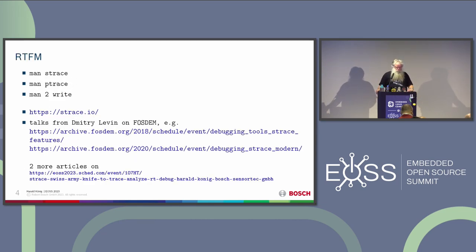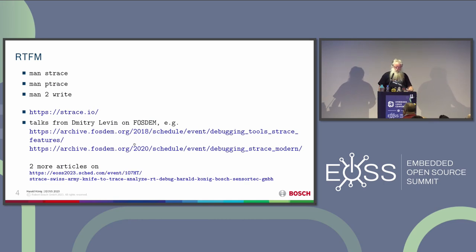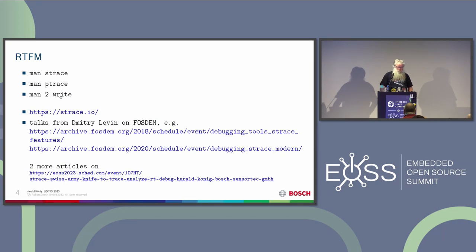About documentation. The most important documentation for me, being a very old Unix guy, is still man pages. You have to read the man page to get all the options and command line options. There are new command line options from time to time - it's active development. I also found some nice talks from Dmitry Levin, who is the author or one of the authors of strace. He gives talks at FOSDEM in Brussels and is very exciting to listen to about new features.